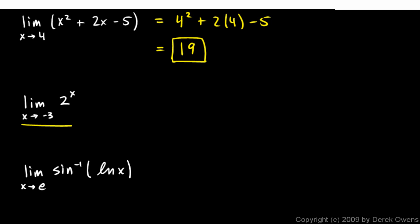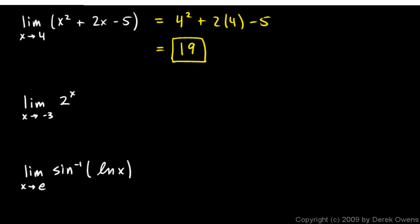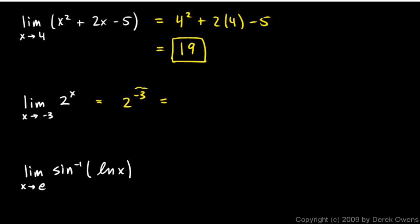In this next one, the limit as x approaches negative 3 of 2 to the x. So we can just put negative 3 in for the variable here. And the answer is 2 to the negative 3. And we remember that a negative exponent is the same thing as 1 over that same thing with the positive exponent. So it's 1 over 2 cubed or 1 eighth.